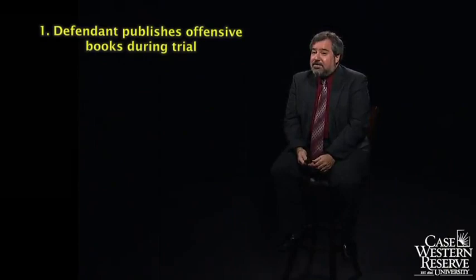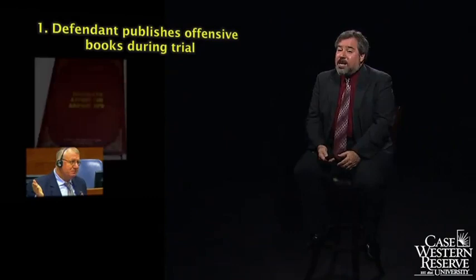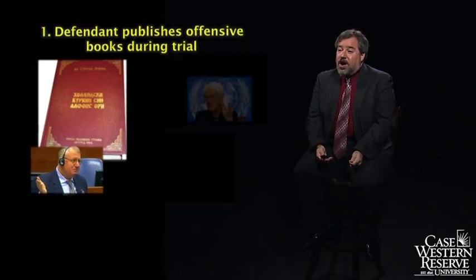Let's look at some case study hypotheticals. First: what if the defendant publishes books during the trial that are offensive about trial participants? This isn't just a hypothetical. Vojislav Seselj, the man who used to lead a paramilitary group called the Eagles — accused of playing soccer with human heads of their victims — wrote books in Serbian about different people involved in the trial. He wrote a book about Chief Prosecutor Carla Del Ponte in which he called her the prostitute of The Hague.